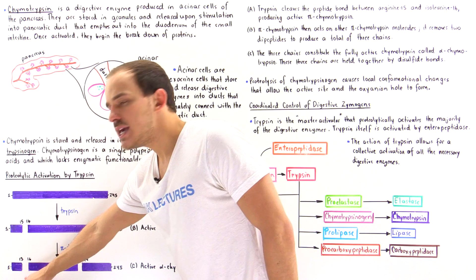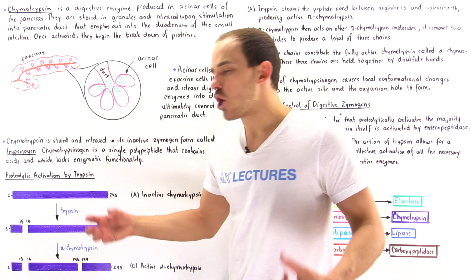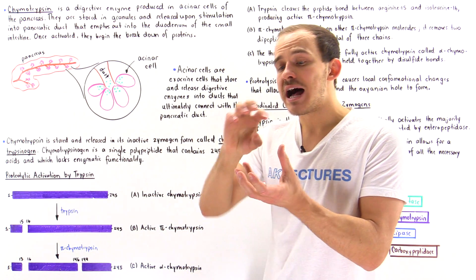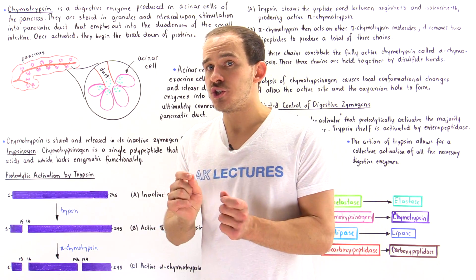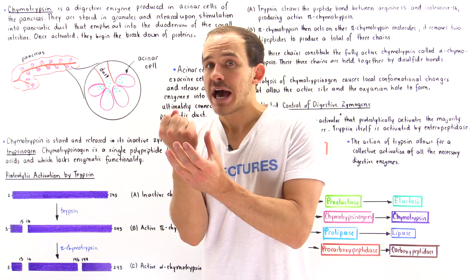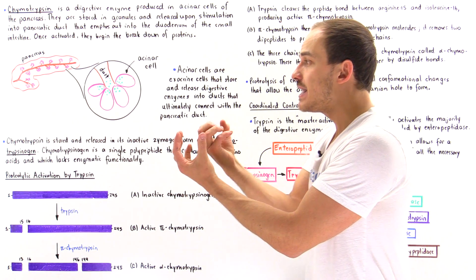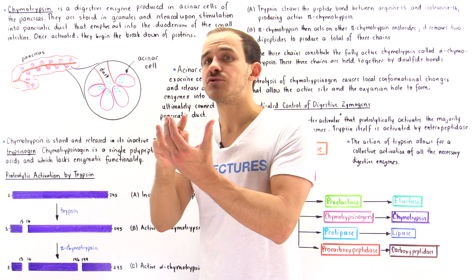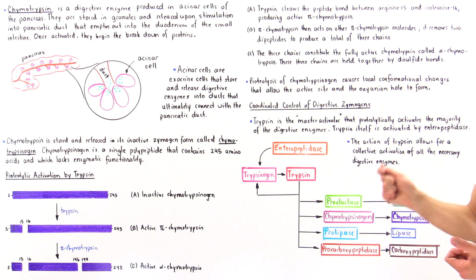Once these three individual chains are formed, they are held together by disulfide bonds. At this point, the active site takes the proper conformation and the oxyanion hole — used to stabilize the tetrahedral intermediate — is fully formed, allowing the active site to fit the substrate and the reaction to proceed.